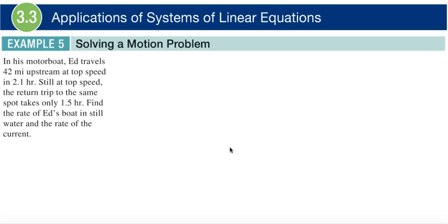So in his motorboat, Ed travels 42 miles upstream at top speed in 2.1 hours. And still at his top speed, the return trip on the same spot takes only 1.5 hours. Find the rate of Ed's boat in still water and the rate of the current.